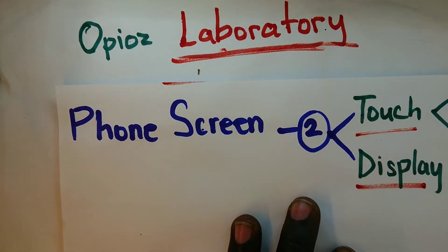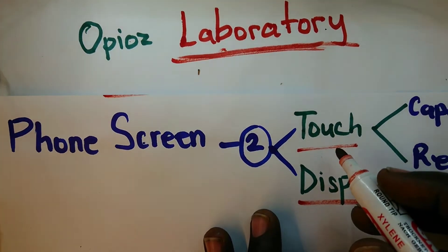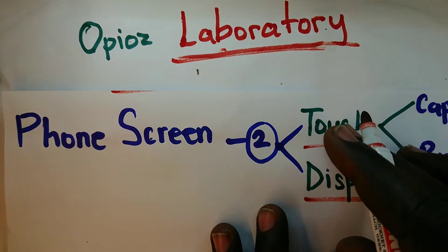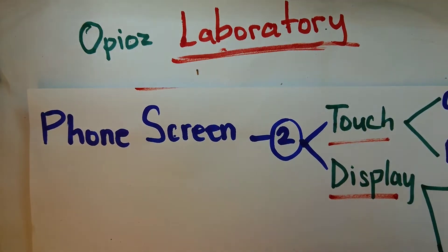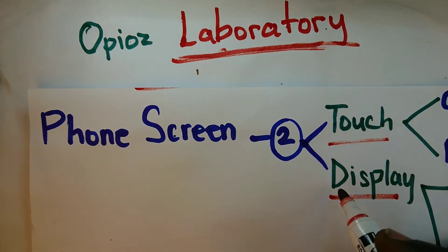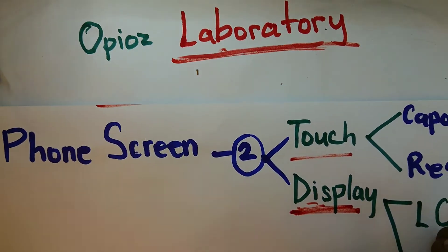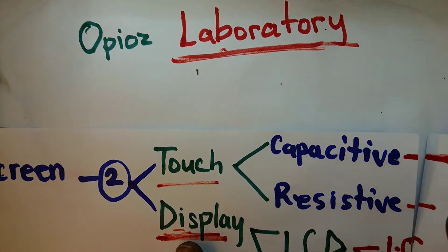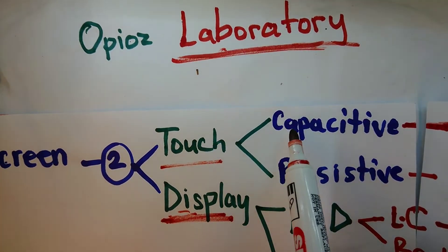So any type of phone screen that you encounter has a touch layer and a display layer. Now this is the layer that reads where you have tapped or typed and it's able to inform the phone, and this shows you the images. Now to understand the touch,